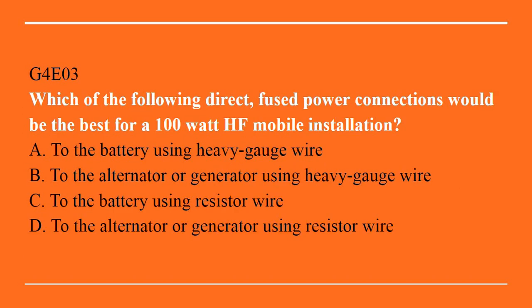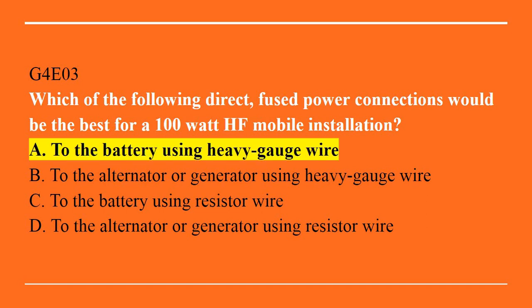G4E03: Which of the following direct fused power connections would be the best for a 100 watt HF mobile installation? A. To the battery using heavy gauge wire. B. To the alternator or generator using heavy gauge wire. C. To the battery using resistor wire. Or D. To the alternator or generator using resistor wire. The best answer is A. To the battery using heavy gauge wire.